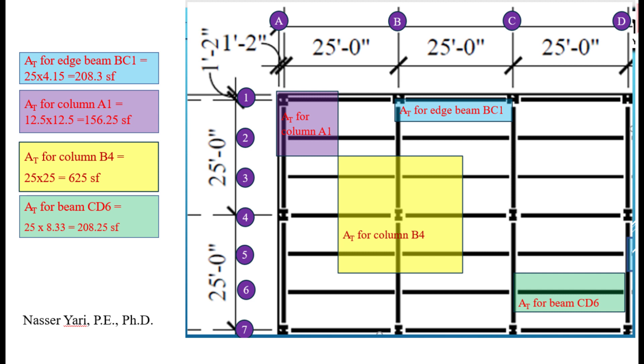Keep going and look at the center column. The tributary area for this center column is, you just measure halfway between this column and the other columns all around them, and you end up with this square here. And therefore your tributary area, basically self-explanatory right here, is 25 feet by 25 feet.